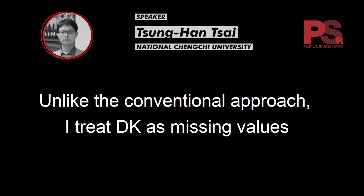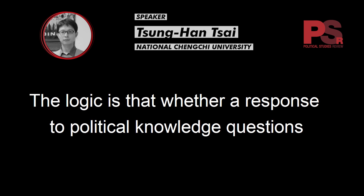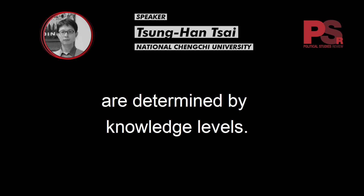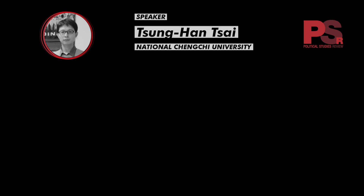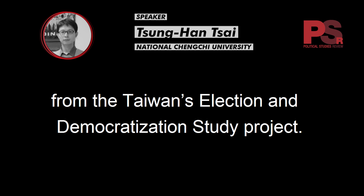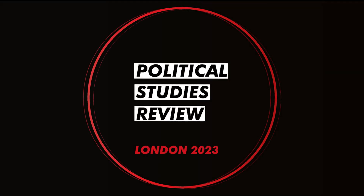Unlike the conventional approach, I treat 'don't know' as missing values and assume that they are missing not at random. The logic is that whether a response to a political knowledge question is correct or not, and whether 'don't know' responses are provided, are both determined by knowledge levels. I apply the proposed model to survey data from the Taiwan Election and Democratization Study project, specifically studying the gender gap in political knowledge.